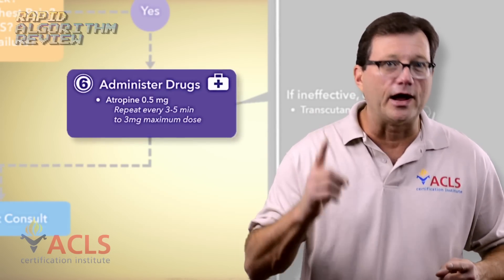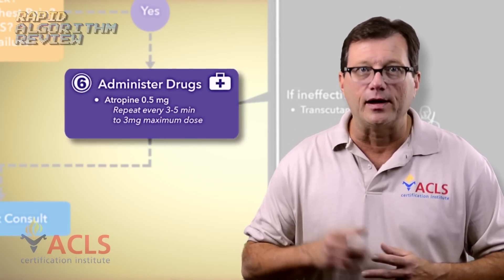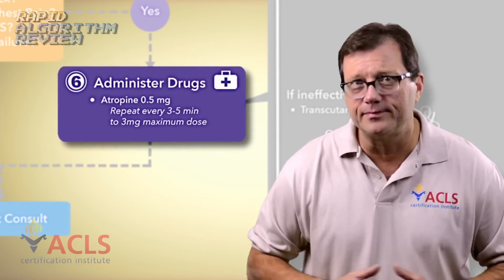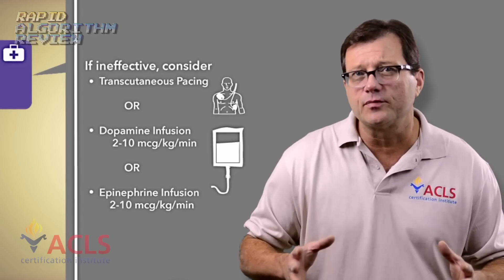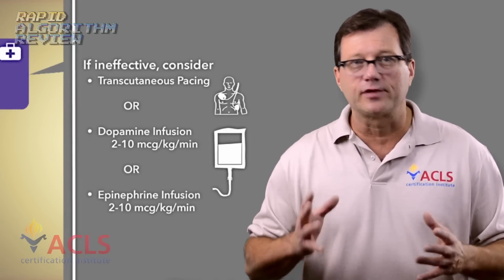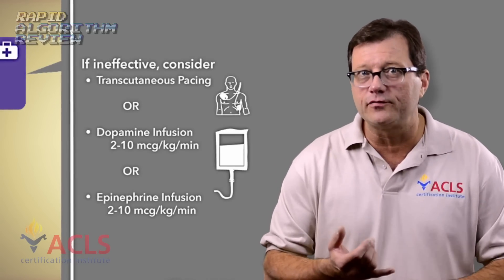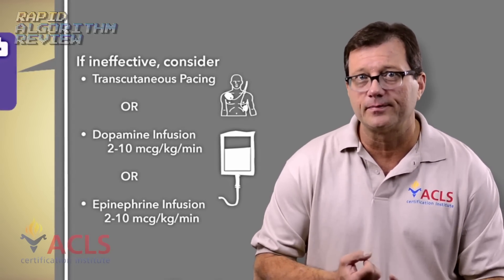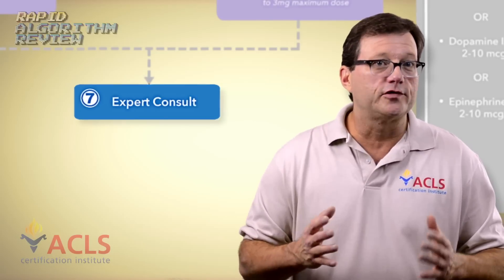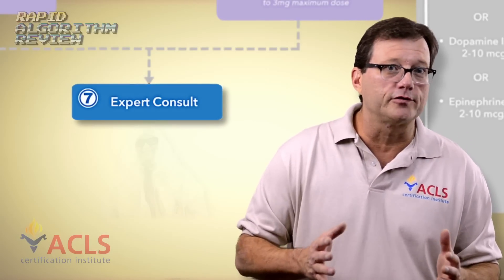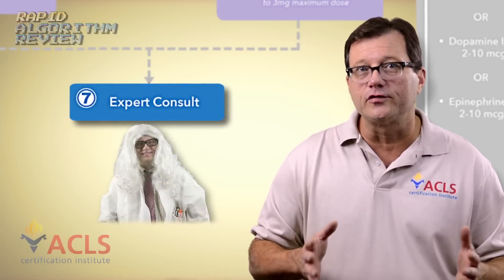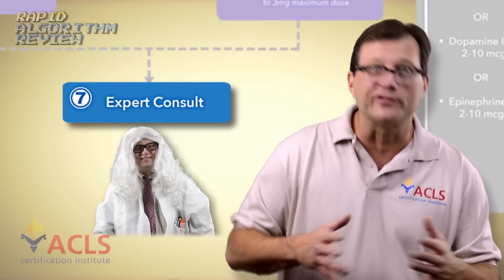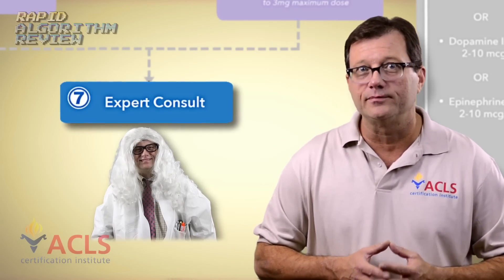First drug up: atropine sulfate, 0.5 milligrams IV push rapid. If the atropine is ineffective, consider a dopamine infusion or going right to transcutaneous pacing. Next, consider an expert consult — get a cardiologist involved with this patient very quickly so we can determine the cause of the bradycardia.